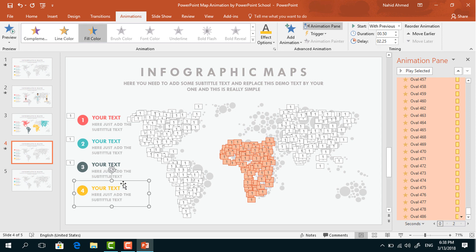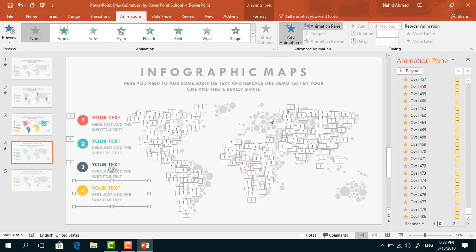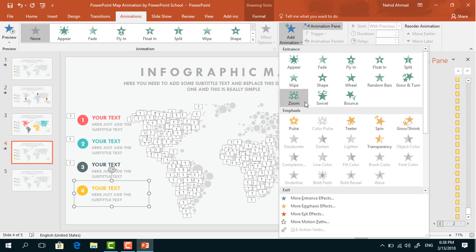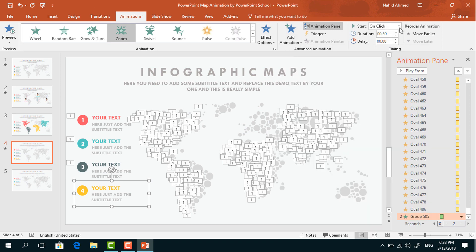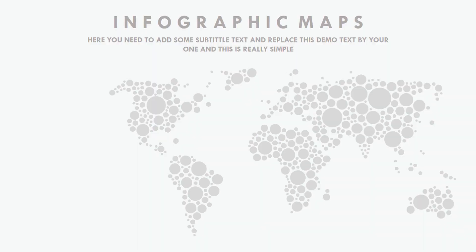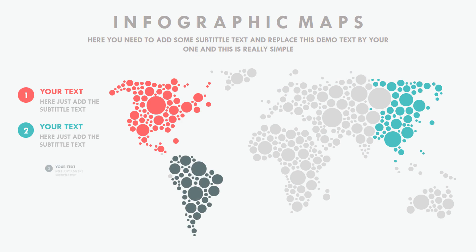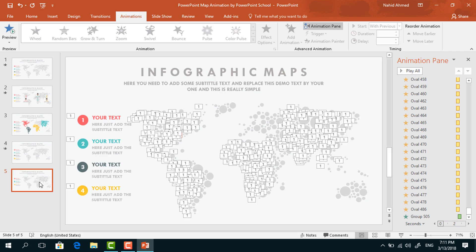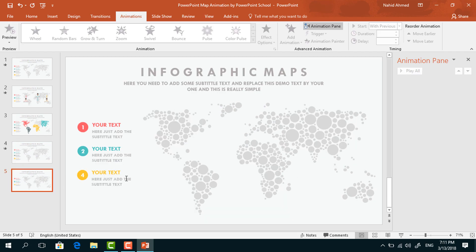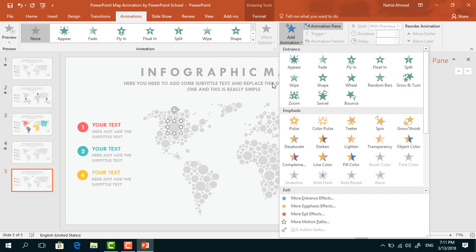At last, select this group of text boxes. From Add Animation, select Zoom again. Set Start With Previous, duration 0.50 seconds, delay 2.50 seconds. And the animation of this slide is ready. Now I will go forward to our next slide. In this new slide, I have taken the same map and the same text boxes. So at first, select this small circle.